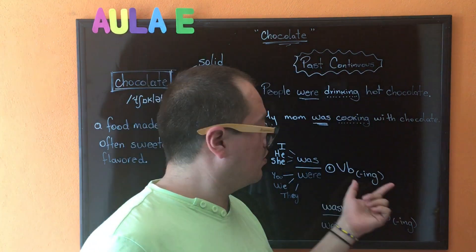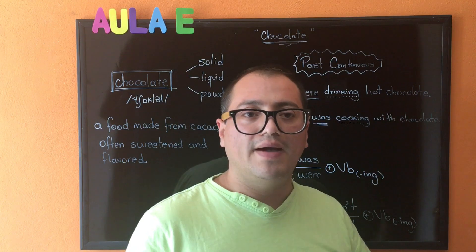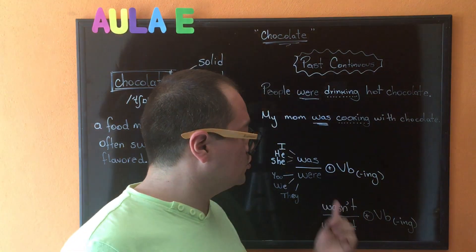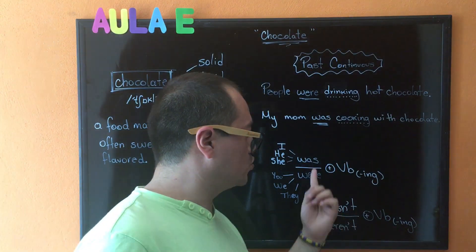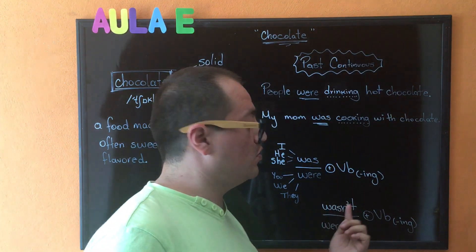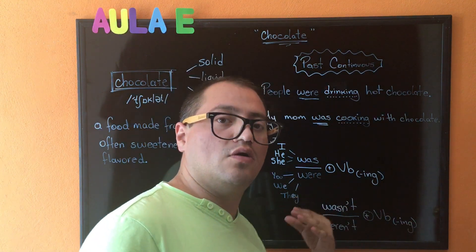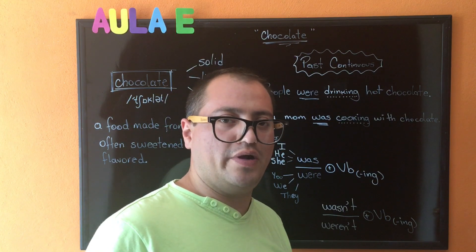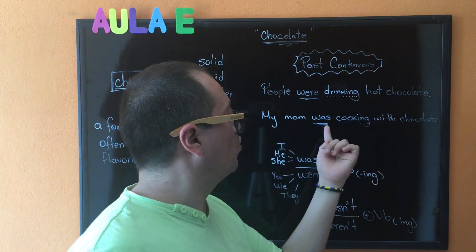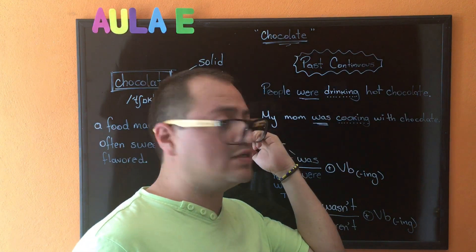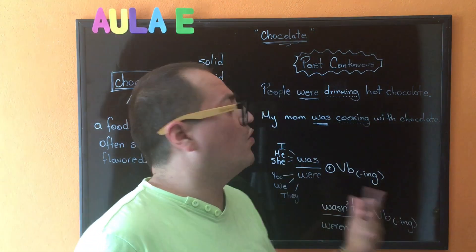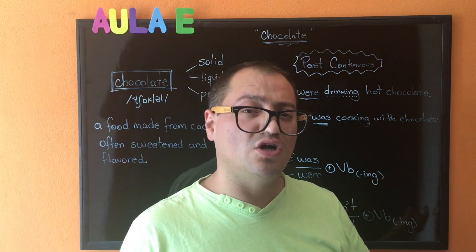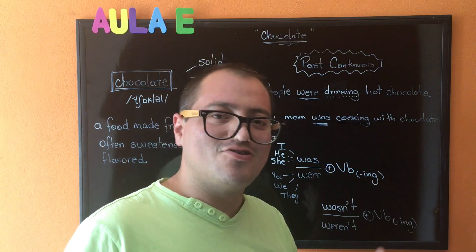And you need to add a verb in -ing to complete the rule. But if I'm going to use a negative one, I'm going to use wasn't or weren't. Y además le tengo que agregar un verbo en ing. No estuvieron haciendo o no estuvo haciendo: wasn't or weren't.